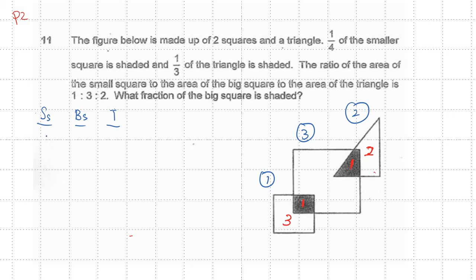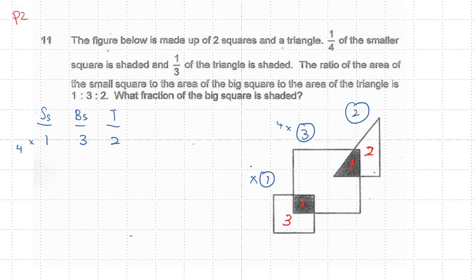So I have the ratio one, three, and two. The small square here is one and the big square here is three, which means you have to make them the same. So times three over here and times three over there. But the small square is actually four, so times four for all: times four, times four, times four, times four. That gives four, twelve, and eight.